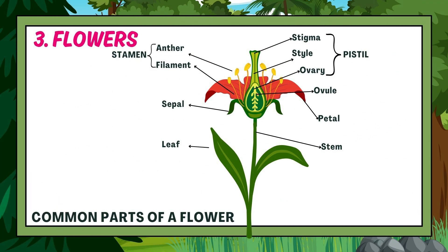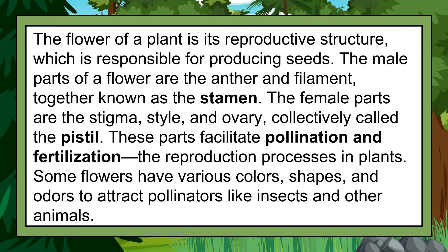Let us take a look at the common parts of a flower. The flower of a plant is its reproductive structure, which is responsible for producing seeds. The male parts of a flower are the anther and filament, together known as the stamen. The female parts are the stigma, style, and ovary, collectively called the pistil. These parts facilitate pollination and fertilization, the reproduction processes in plants.